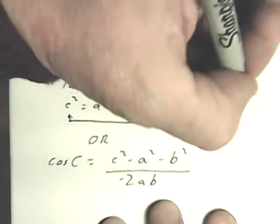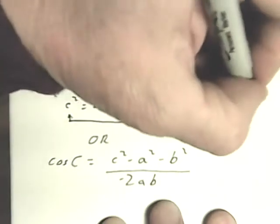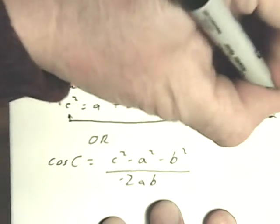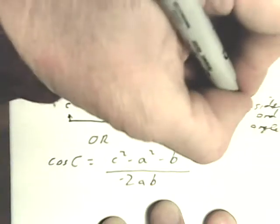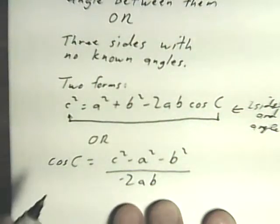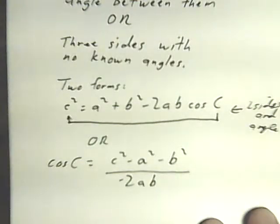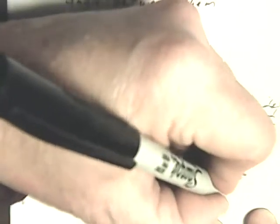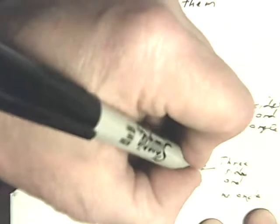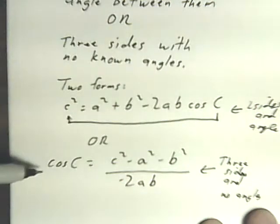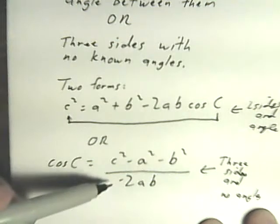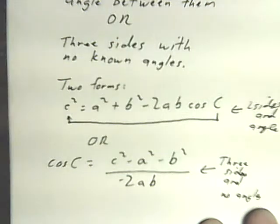You would use this form if you want to find the third side, so you're given two sides and an angle. Here is where I want to find an angle when I'm given three sides and no angles. So it's cosine of C equals c squared minus a squared minus b squared over negative 2ab. This is just a rearrangement of this equation right here.